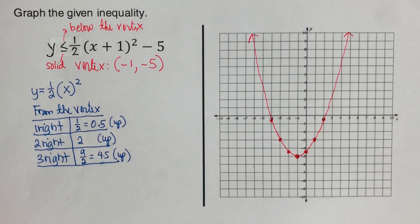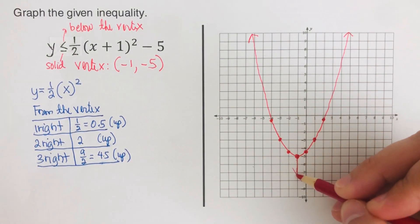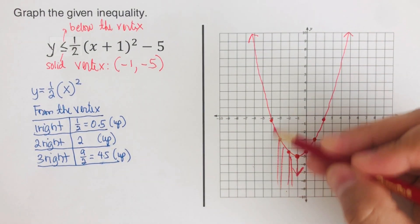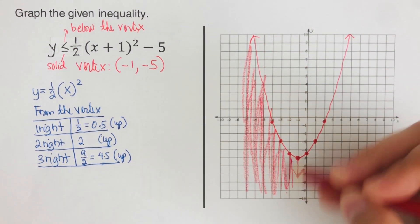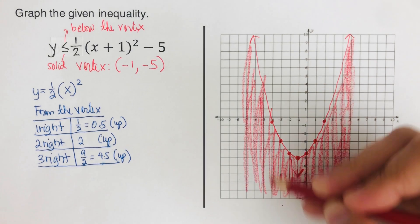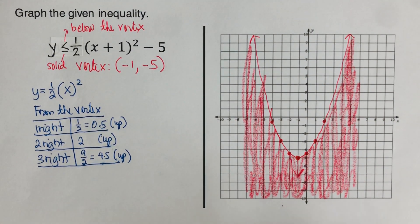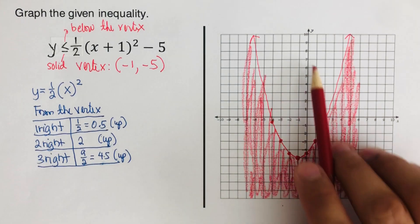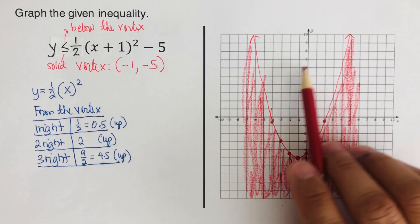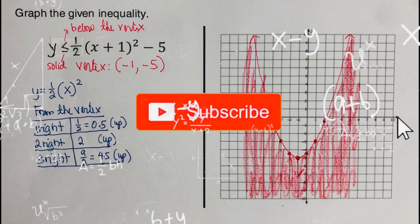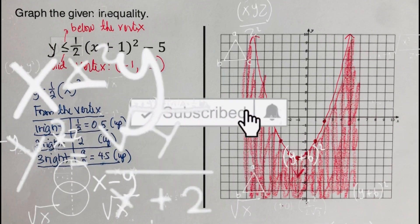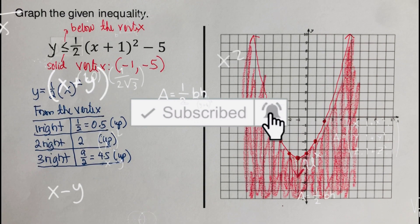We shade all regions below the vertex — those are the solutions to this inequality. The region above the vertex, which is not shaded, is not a solution. Did you get the same answers? Good. If you found this video helpful, please like and subscribe for more math videos!